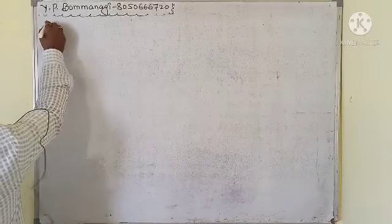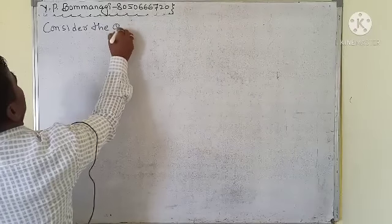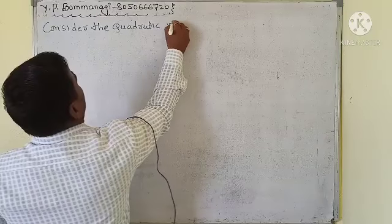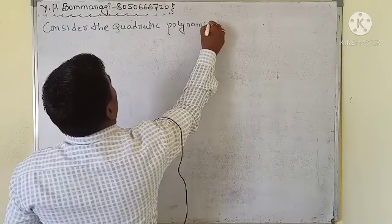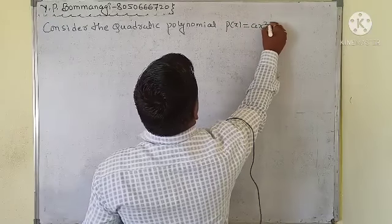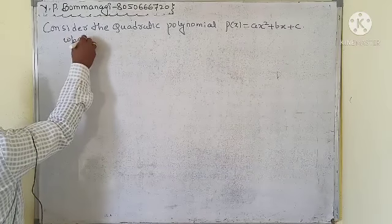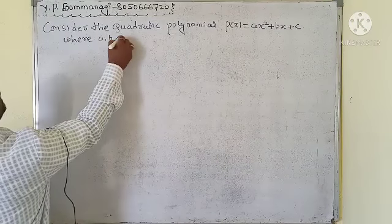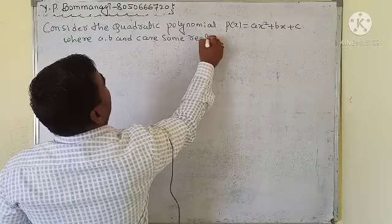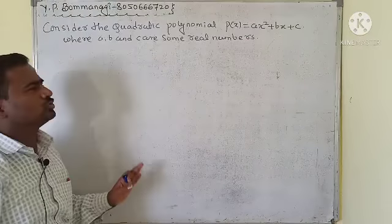Consider the quadratic polynomial: p(x) = ax² + bx + c, where a, b, and c are some real numbers. Based on this expression, we are going to find out the values.